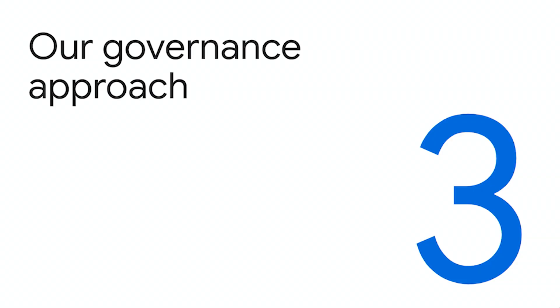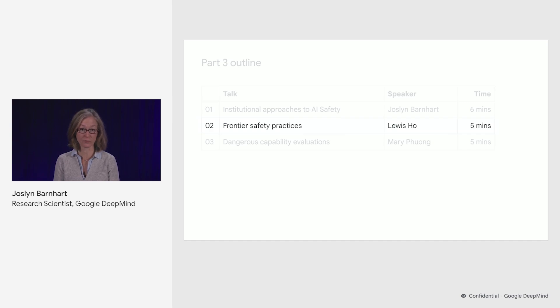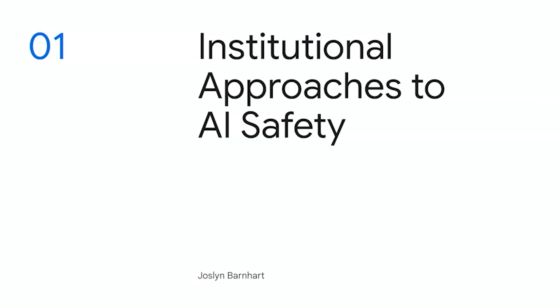Welcome to section three of our course on our governance approach. This section is going to have three different presentations: the first on institutional approaches to AI safety, the second on our own frontier safety practices within Google DeepMind, and the third on the dangerous capability evaluations at the heart of those frontier safety practices. My name is Jocelyn Barnhart, and I am a research scientist on the frontier safety and governance team here at Google DeepMind.